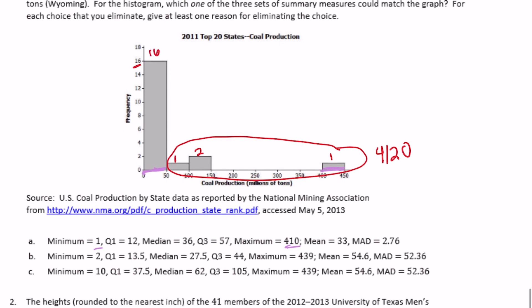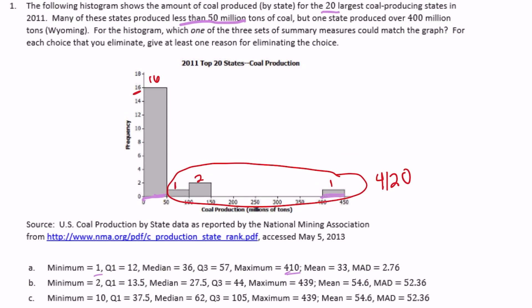So it does make sense that quartile one would be about 12 because the vast majority of the data is less than 50. Median being 36 seems realistic because it's within this range. Quartile three says it's at 57, which would be about right here. Quartile three would be the middle of the 15th and 16th data points, which we know are going to lie within here, so it's going to be less than 50. So I can eliminate A. A doesn't work.